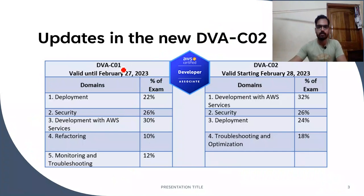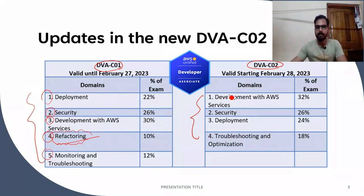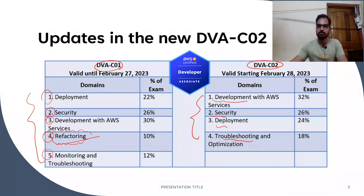Previously in DVA-C01 there were five sections: deployment, security, development on AWS, refactoring, and monitoring and troubleshooting. In the new exam there are only four sections. What they did is include the refactoring section across all other sections, because refactoring is actually a very important concept. Whenever you do any form of development like app development, you need to do a lot of refactoring. That's why it's scattered over all the other domains, and that's also why the percentage distribution has changed.